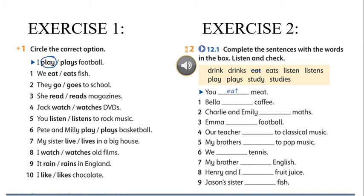Now we'll have some exercises to review the lesson. Exercise one: circle the correct option. You have to look at the subject first, then choose the correct form of the verb. For example, with 'I' we say 'I play football' not 'plays'. With 'we' — a plural noun, two or three people — we say 'we eat fish', not 'eats'.